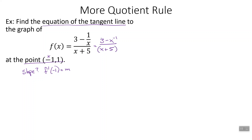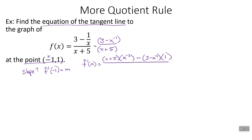Following the quotient rule: low times the derivative of the top. The derivative of 3 is 0; we bring down the negative 1, so we get positive 1 out front, and x to the exponent one less, which is negative 2. Minus the top, 3 minus x to the negative 1, times the derivative of the bottom — derivative of x is 1, derivative of 5 is 0, so we get just 1. All over the bottom squared. There's our derivative.